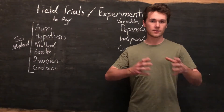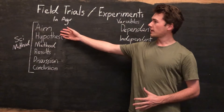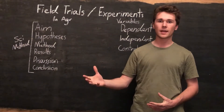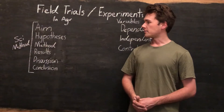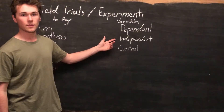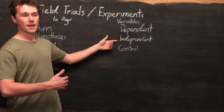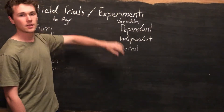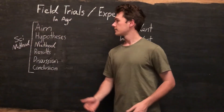Our aim is essentially the goal of our experiment. We usually frame it as: how does this affect this? It doesn't have to be complex. If you're a farmer wanting to trial a new product, you just think about it in your head — you don't have to write a report. The aim is simply: how does our independent variable affect our dependent variable? For example: how does the application of fertilizer affect the growth of oat plants?